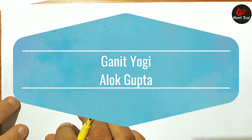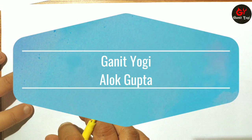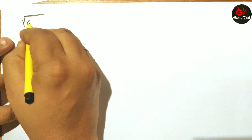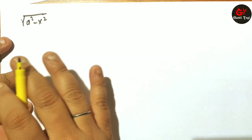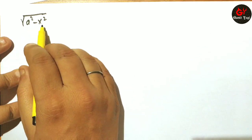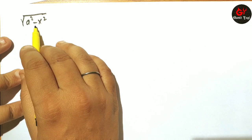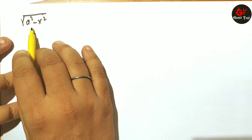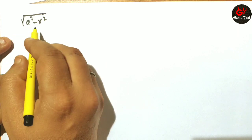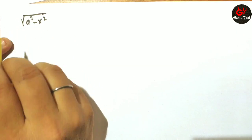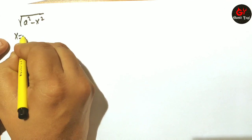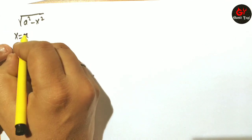Here we will do a different type of problem using a standard form. For example, the standard form involves the square root of a² minus x². Whenever you see the expression √(a² - x²), I will use the substitution x = a sinθ.